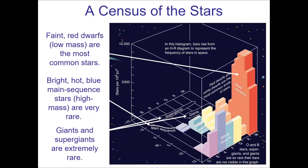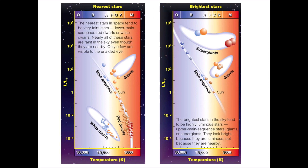Stars we see in the night sky are bright because of their luminosity, not because they're close. Some stars are bright because they're nearby, but most are bright because of very large luminosity. The HR diagram comparisons allowed us to understand a lot more about our neighbors and the stars we see in the night sky based on their placements.